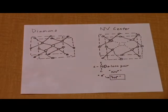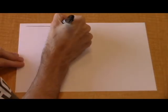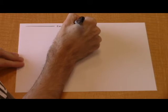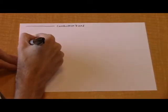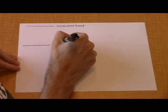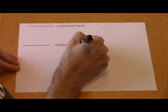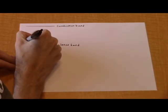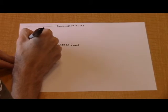Next, we need to understand how these nitrogen vacancy centers function. The center has a zero phonon line at 638 nanometers, which is the wavelength of a photon emitted by an electron directly moving from the excited state to the ground state.